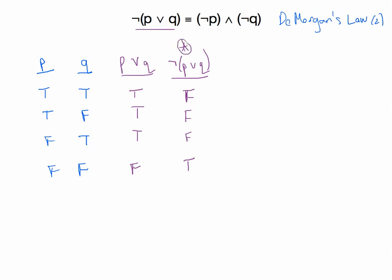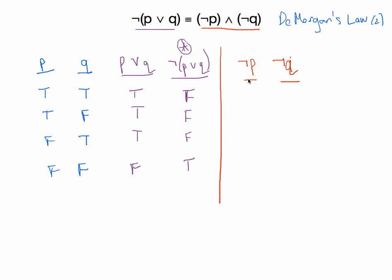I'm going to switch colors over to red and do the right-hand side here. I'll use the existing P and Q columns to make this new one. I'm going to need a column for not P and a column for not Q, because those are two smaller statements that make up the proposition on the right. Not P is obtained by going to the column for P and changing the truth values: false, false, true, true.